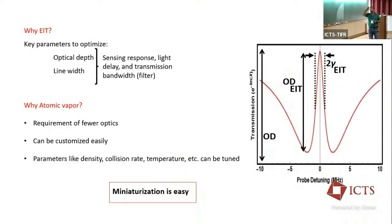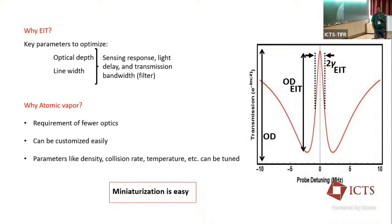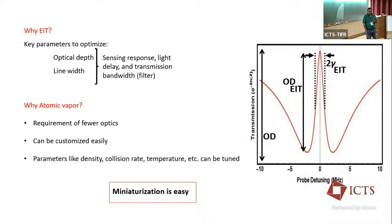Why EIT? There are two key parameters to optimize: the amplitude and the linewidth, because most applications discussed — sensing, filtering, light delay — involve variation in linewidth, amplitude, or separation. Why work on atomic vapor? The requirement for optics is minimal, it can be customized easily, and parameters like density and temperature are easily accessible and manipulable. Atomic vapor is a quite good candidate for a quantum sensor because miniaturization would also be easy.